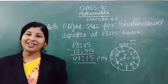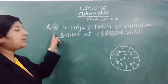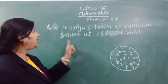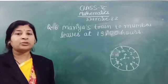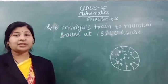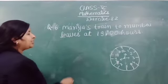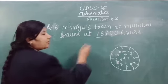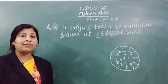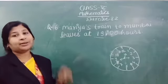Let's solve this question. So, here student, this is the last question: Maria's train to Mumbai is at 19 hours. So, we convert this time into 12-hour clock. Let's solve it. Is it above 12? Yes. It is above 12. So, we minus 12 from this number.